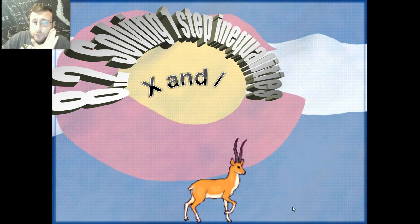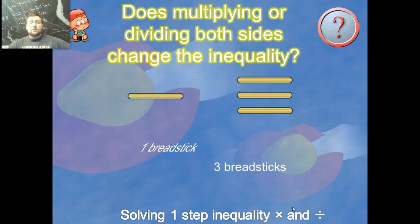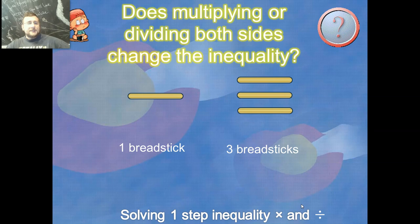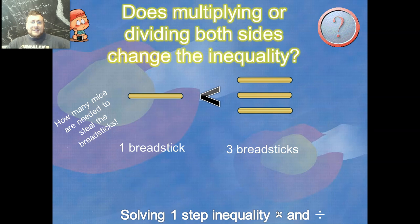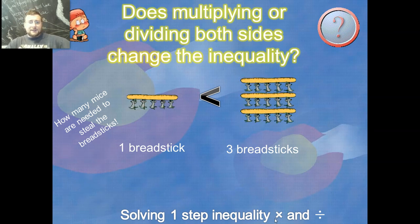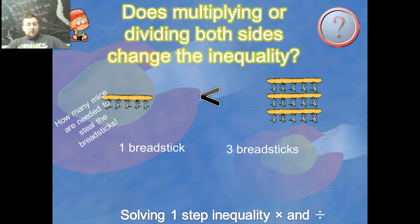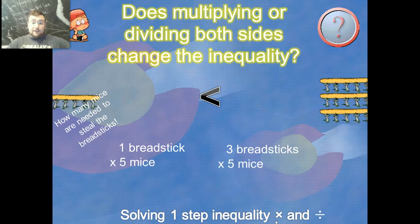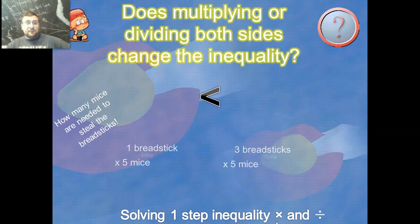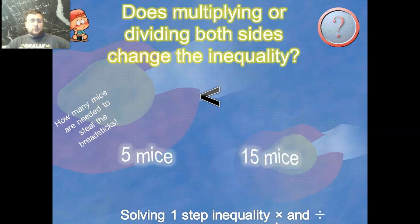So if you have three breadsticks and one breadstick, of course three breadsticks is more, so our right side is bigger. Let's say we multiply both sides by five, because five mice will come to steal each of the breadsticks. One times five is five, and three times five is fifteen, so we have five on the left and fifteen on the right.